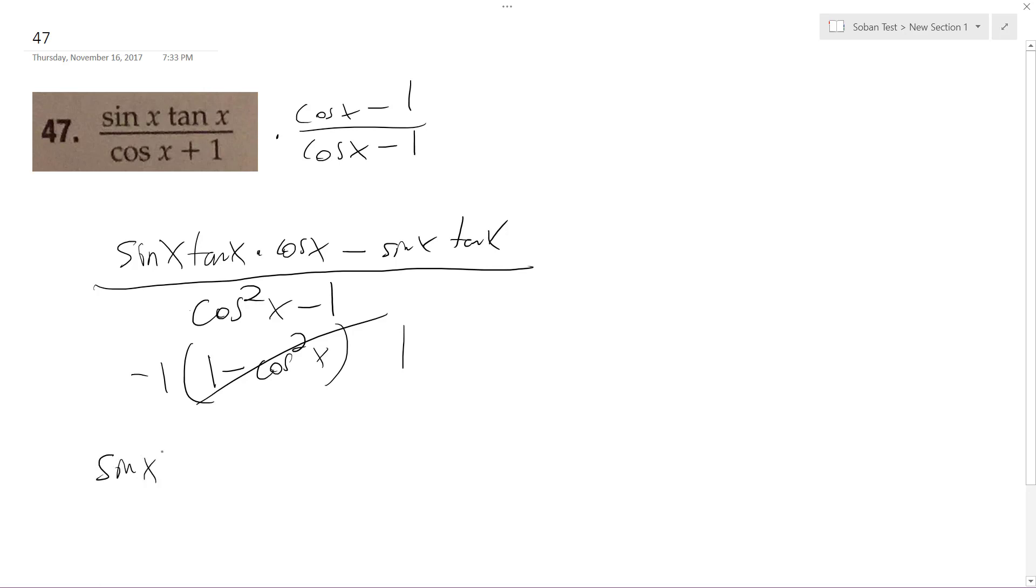And then distribute this negative 1 on top. So, I get sine x tangent x minus sine x tangent x times cosine x. Alright, so what we can do on top here. The denominator is gone. This is all we have.